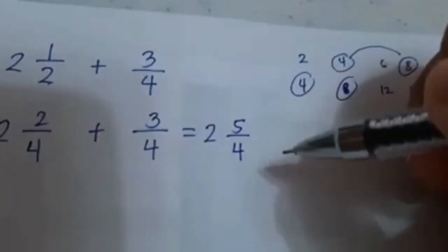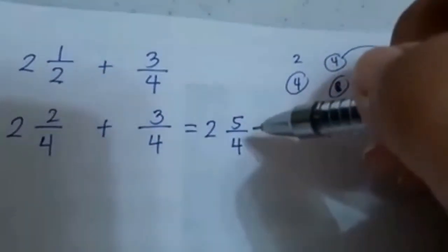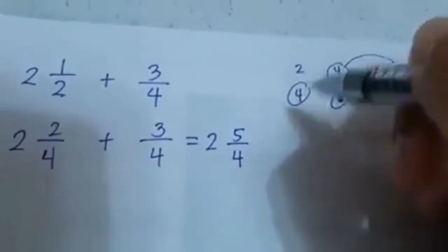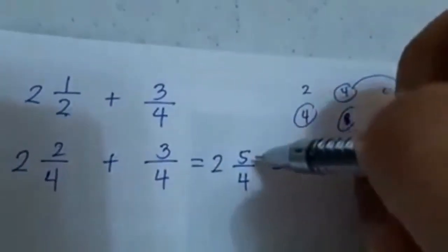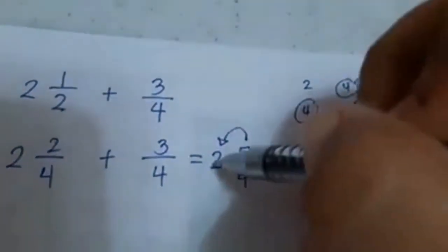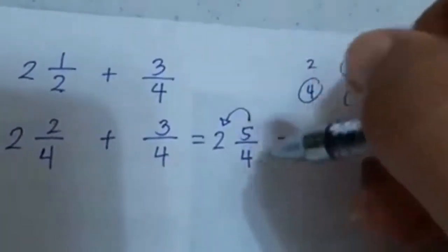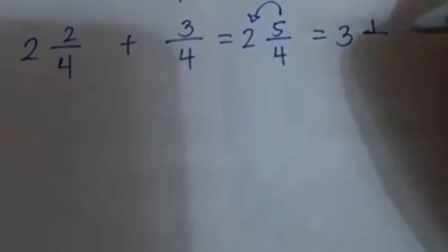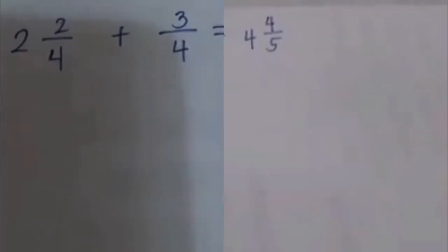Looking at your answer, you have 2 and 5 fourths — the numerator is greater than the denominator, so you need to regroup. How many 4s can you get from 5? Only one. Add that 1 to your whole number: 2 plus 1 equals 3. The remainder from 5 divided by 4 is 1, so 1 is your new numerator. Copy the denominator. Your final answer is 3 and 1 fourth.